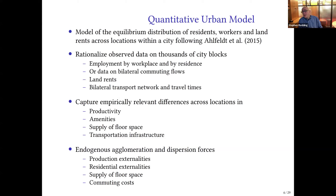We also want the model to allow for agglomeration forces — production externalities where the denser employment in an area, the higher productivity — as well as residential externalities. Those are the forces for agglomeration. Then there are forces for dispersion: an inelastic supply of floor space and commuting costs. The key question in these quantitative urban models is how important are differences in exogenous productivity and amenities across locations, and how important are the agglomeration economies, the endogenous forces for concentration of economic activity.